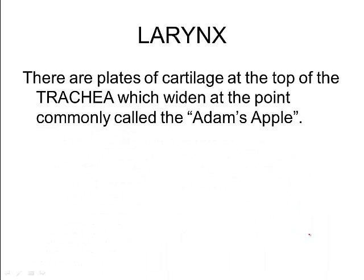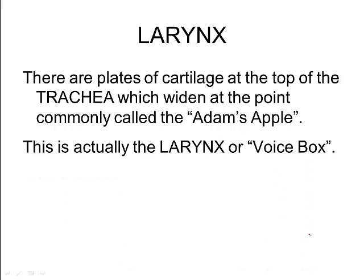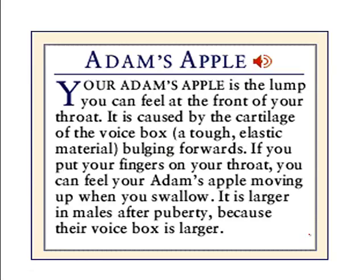Right at the top of your trachea is a plate of cartilage called your Adam's apple — this is your larynx, or voice box. Your larynx is filled with elastic fibers on the inside, and the length of those fibers and how much they vibrate produce the sounds of your voice. Everybody has an Adam's apple. In men it's larger because their voices are deeper — the bigger your voice box, the longer the cords, and the deeper the sound. After puberty, males' larynx gets much bigger, which is when their voices get deeper.